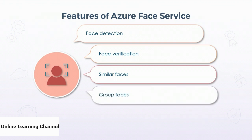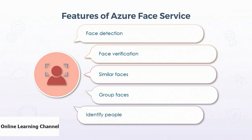Then comes the grouping feature. Grouping faces allows you to effectively categorize people into logical groups. For example, you can have a group of people as employees, then scan images to see if a person belongs to one group or another. And finally, there's the ability to actually identify people — taking an image of a person, or even many people, and being able to identify who that person is based on a database of people.